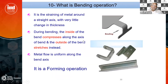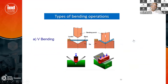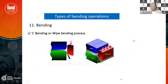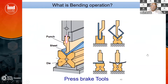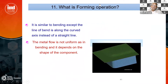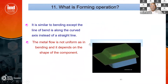Then comes bending operation. What is bending? What are the different types of bending operations? These are some theoretical aspects of bending operations. Why do we do bending operations will be elaborately discussed. Then what is the forming operation, and what is the difference between bending and forming will be explained.